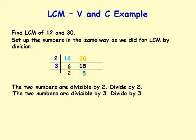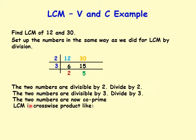The two numbers are now co-prime. Two and 5 do not have any common factor other than 1, so they are relatively prime. LCM is the crosswise product, 12 times 5 which is 60, or 30 times 2 which is 60. The LCM of 12 and 30 is 60.